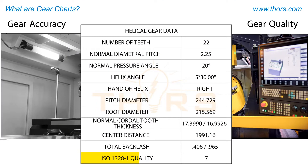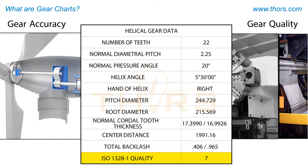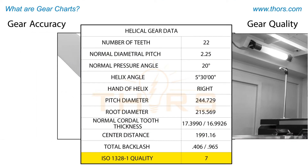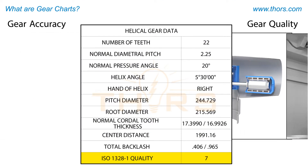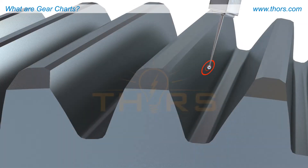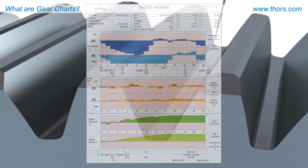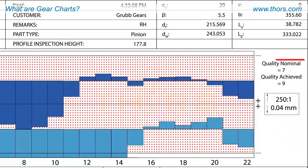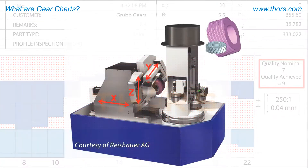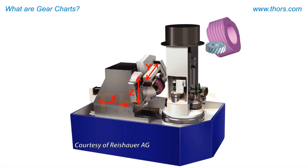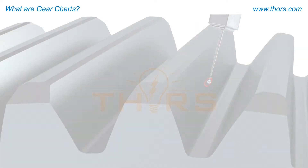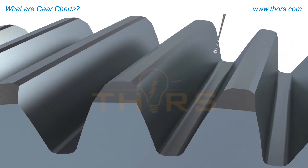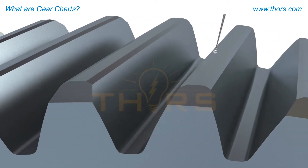Design engineers use these standards to define the gear accuracy class required for the specific application on the engineering drawings. The gear accuracy levels assigned to gears as a result of the measurement process help design engineers to communicate the design intent and allow manufacturing companies to tailor their processes to ensure the right quality parts are produced.